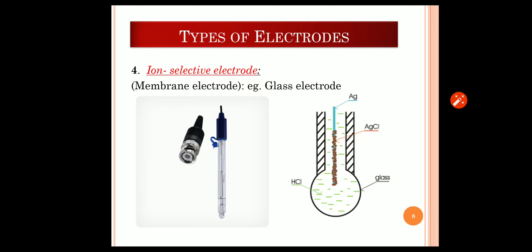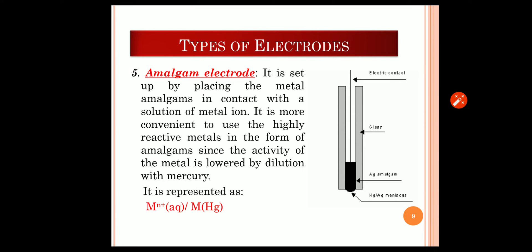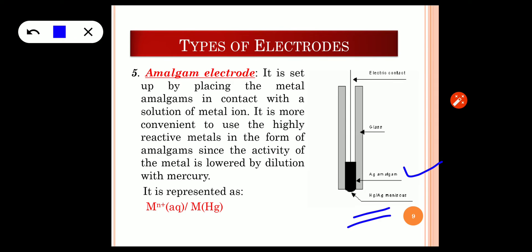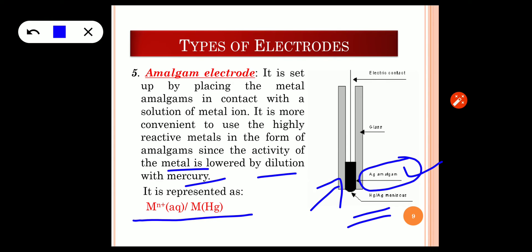The fifth type is the amalgam electrode. As the name indicates, an amalgam is prepared — here, silver is mixed with mercury to form silver amalgam. The amalgam is prepared because some metals have high activity; to reduce the activity of those metals, they are diluted by amalgamating with mercury. The representation shows a metal ion in aqueous form in contact with the amalgam. A silver amalgam is in contact with Ag⁺ ions. It is more convenient to use highly reactive metals in the form of amalgams since the activity of the metal is lowered by dilution with mercury.